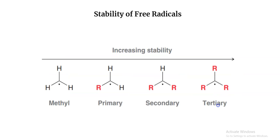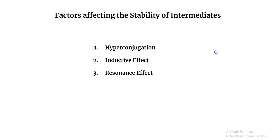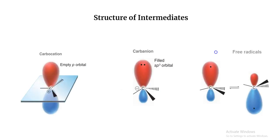The stability of free radicals is similar to that of carbocations. As you go from methyl to primary to secondary to tertiary, the stability increases. We'll talk about the reasoning for why these trends are as such in the next session.